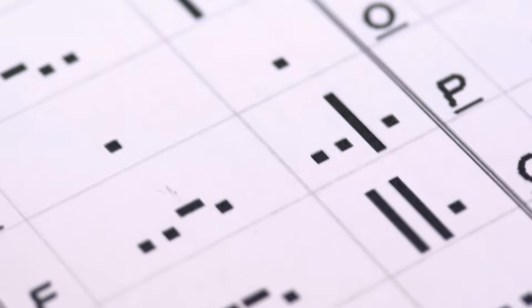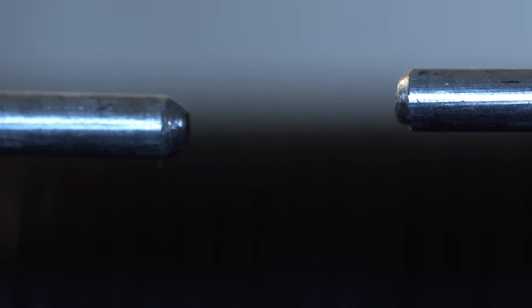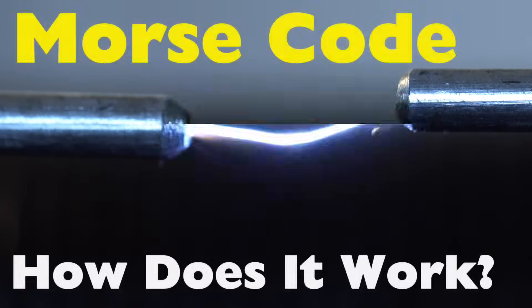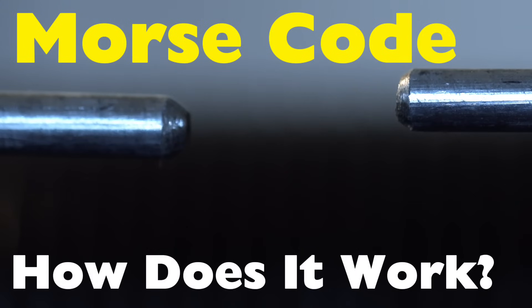This series of dots and dashes allowed people to send messages across vast distances using nothing more than sound, light, or electrical pulses. But how does Morse code actually work? How did it shape the way we communicate?